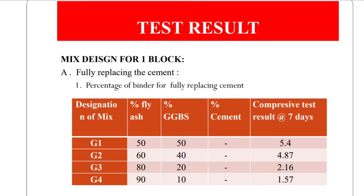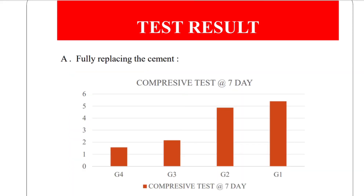Test results for fully replacing cement: with 50% fly ash and 50% GGBS, the compressive strength is 5.4 N/mm²; with 90% fly ash and 10% GGBS, the compressive strength is 1.57 N/mm². It is observed that compressive strength decreases as the percentage of fly ash increases.